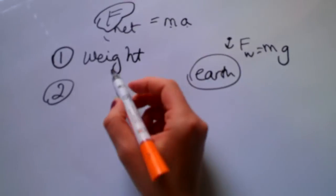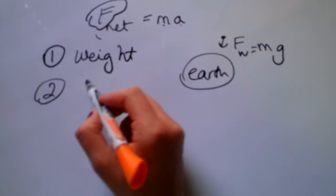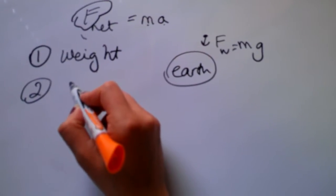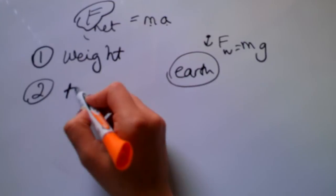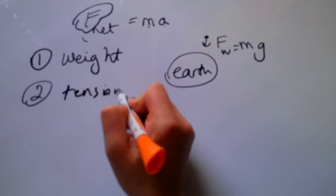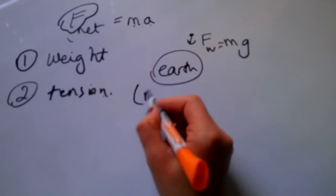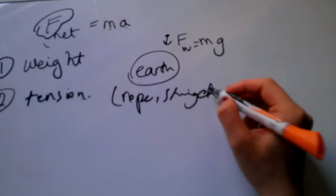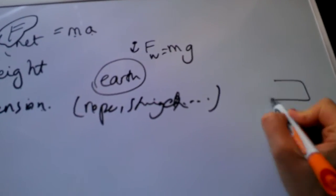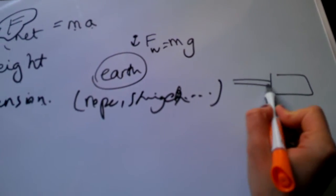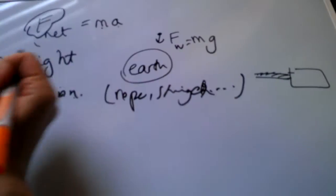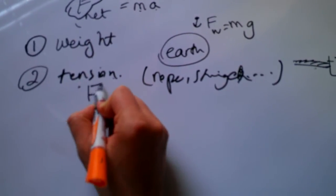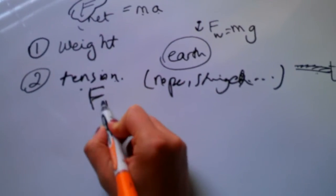Another force that comes into play when we are solving physics problems is tension. This is the force due to a rope or a string. For example, if there is a box here and there is a string or rope attached to it and you're pulling it this way, there is a force due to the tension in the string or the rope, F of T.